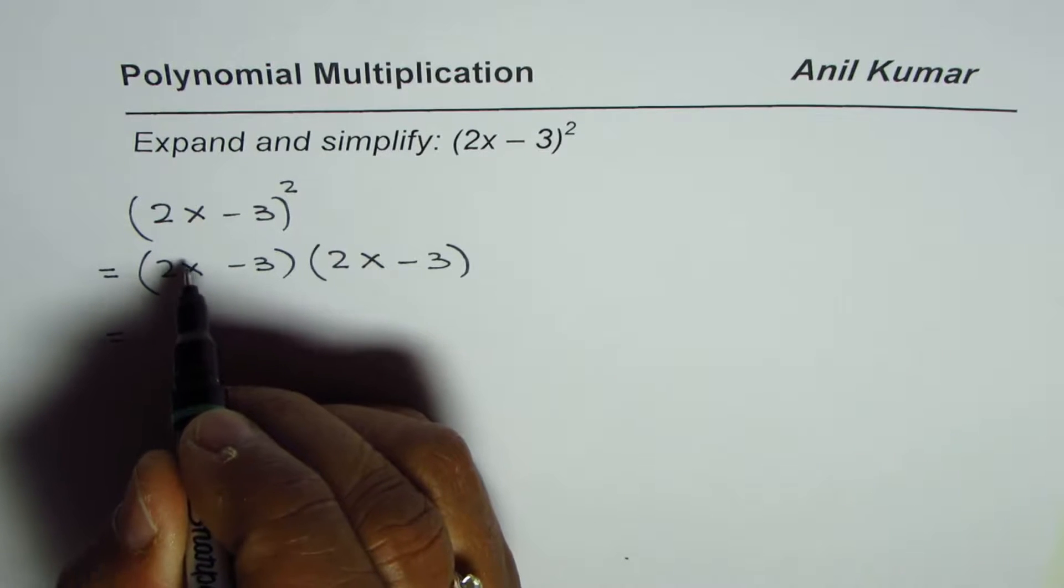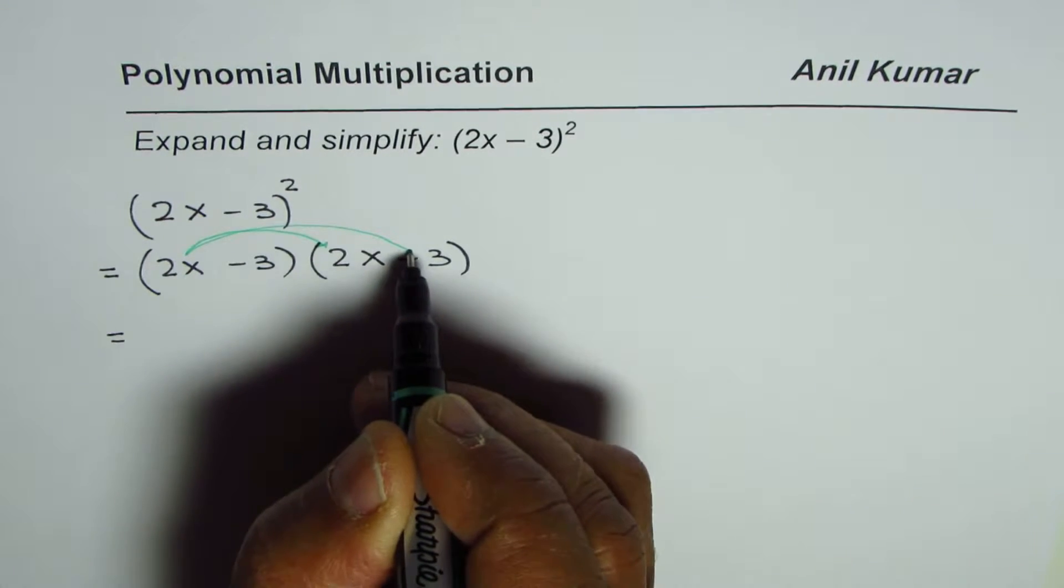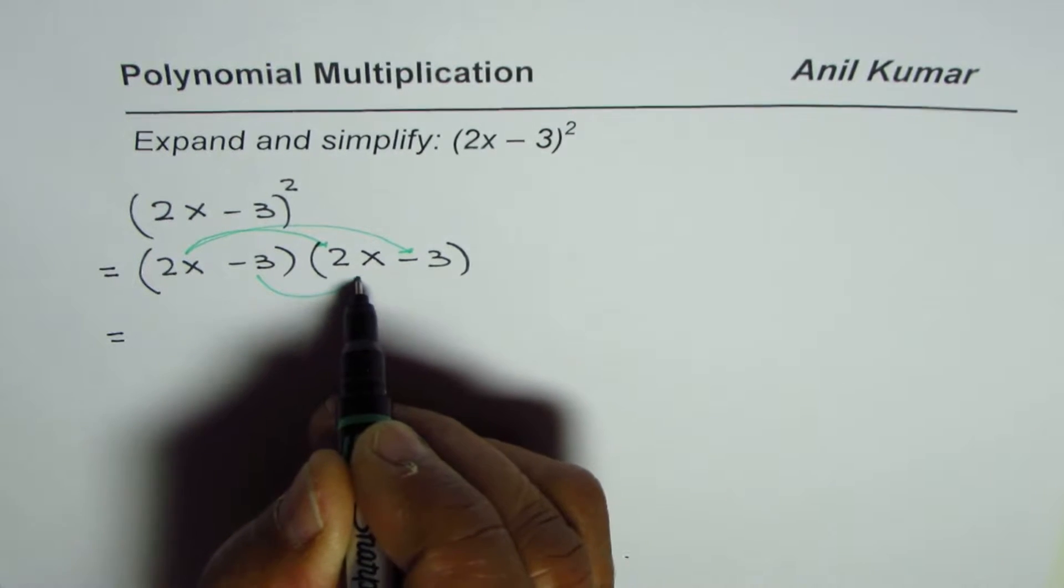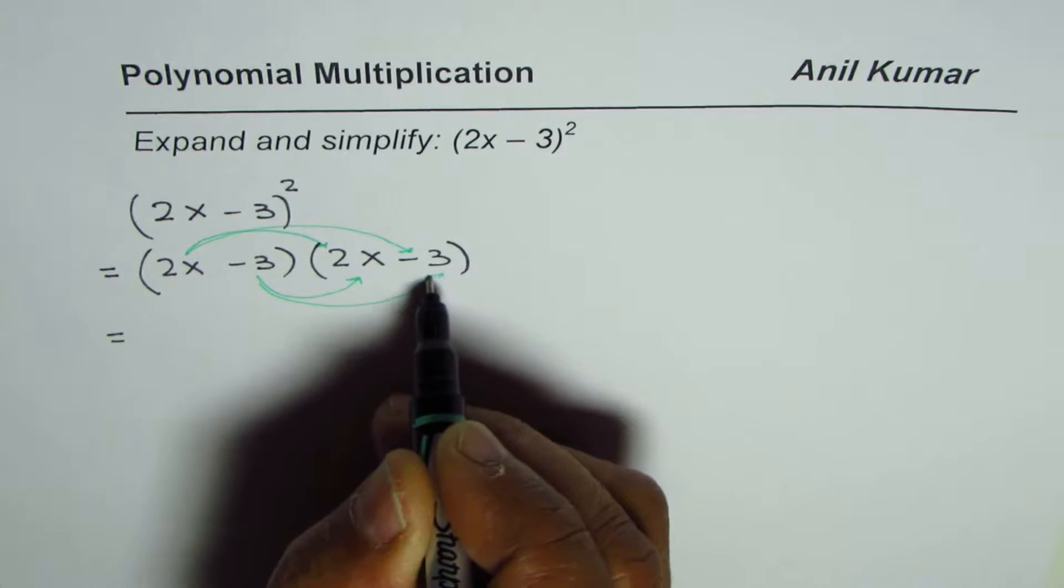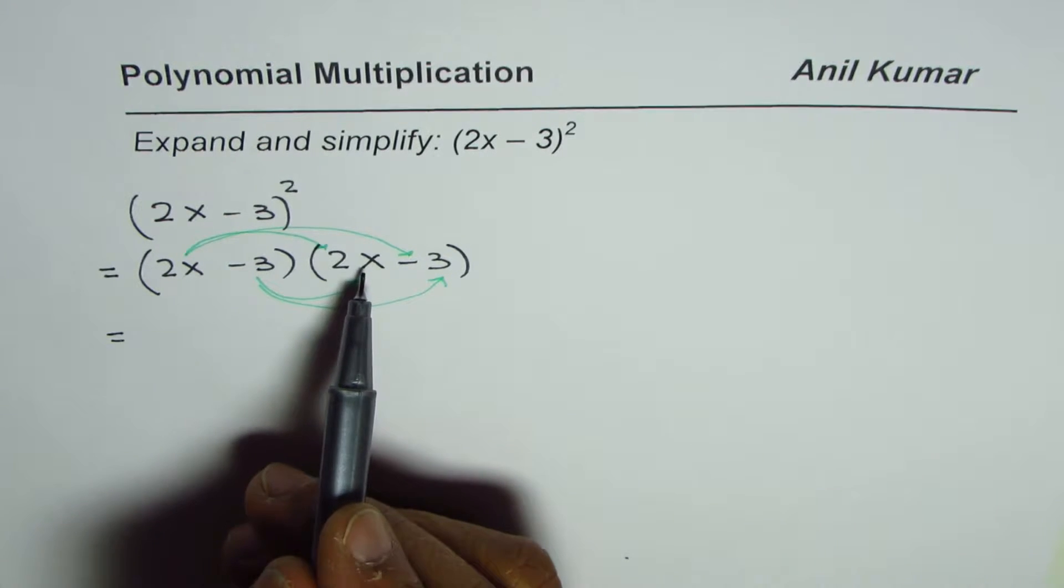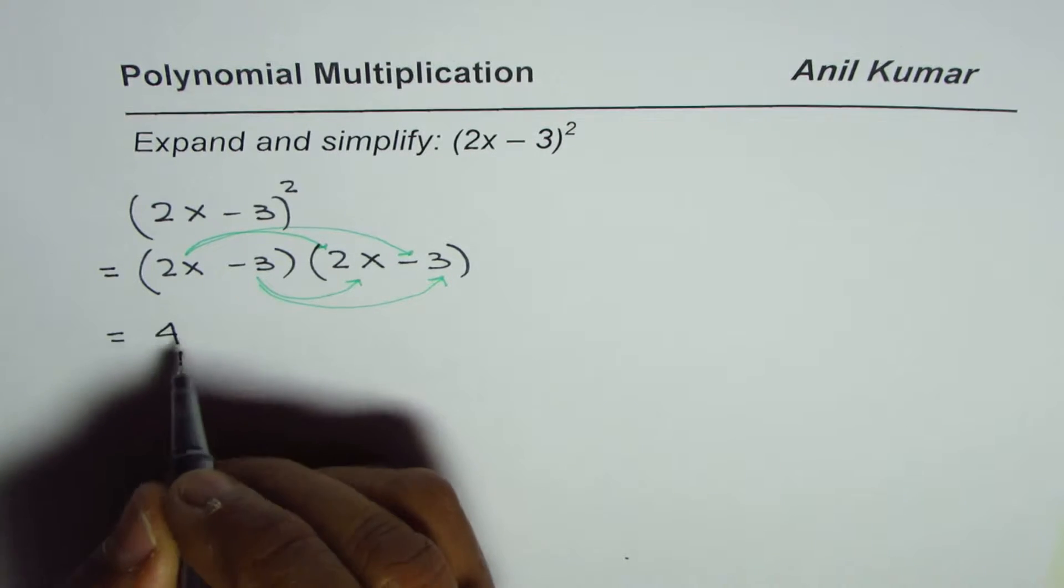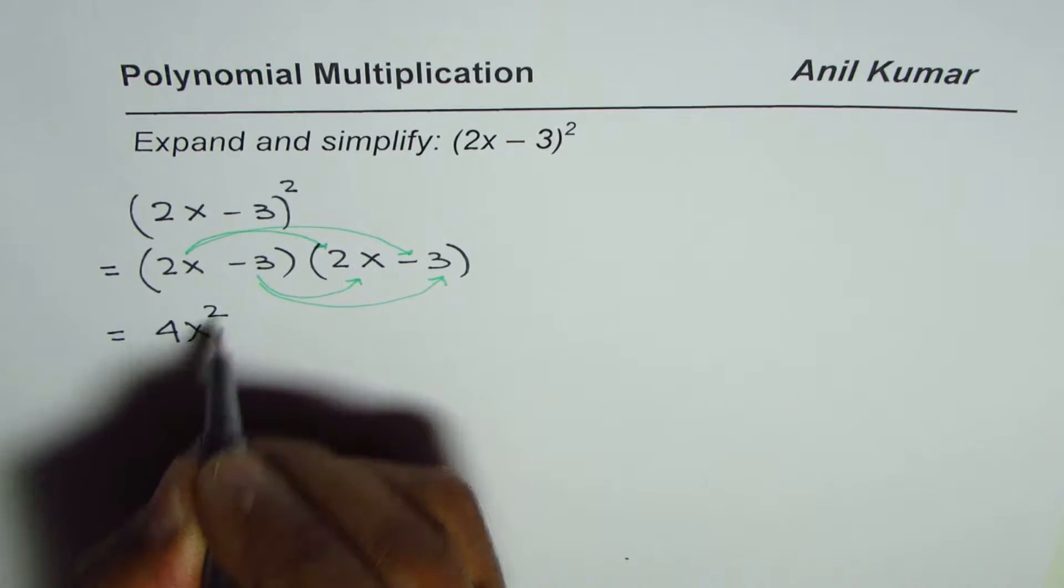We'll multiply 2x by both these terms one by one and then by -3. So we'll get four terms. Let's do it. 2x times 2x is 2 times 2 is 4, and x times x is x². So we get 4x².